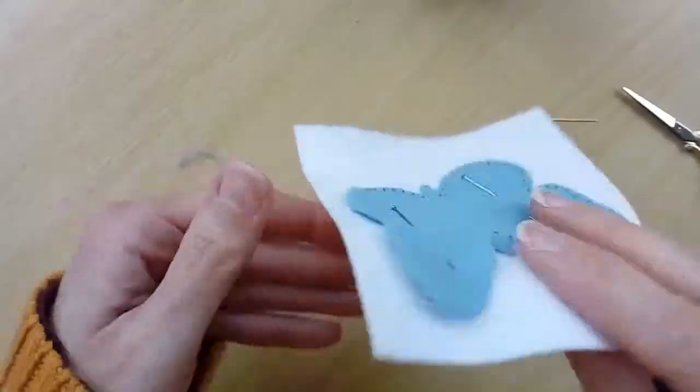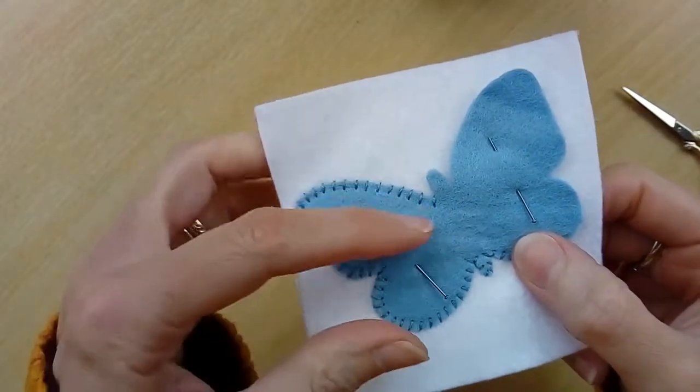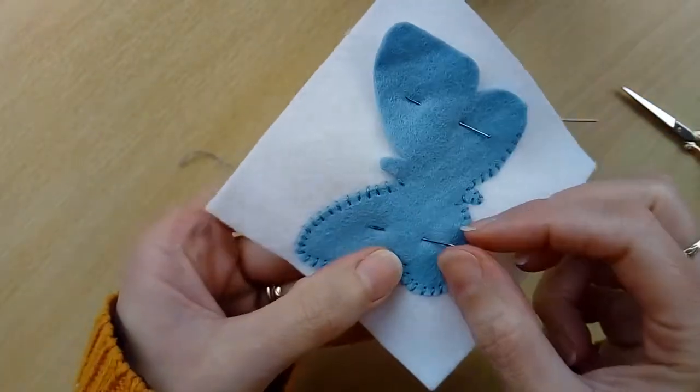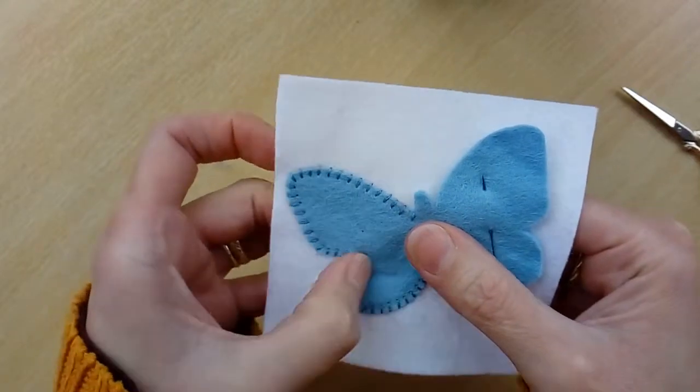Once you've got to this stage, you've now secured your left side of your butterfly, so you no longer need the pin. Just take the pin out - it might leave a couple of holes, just rub over them with your nail and they'll disappear.